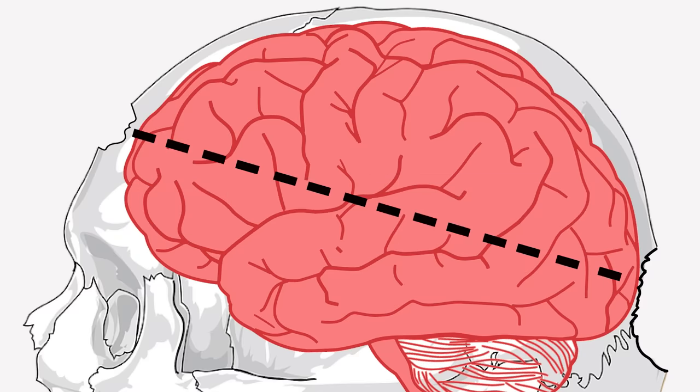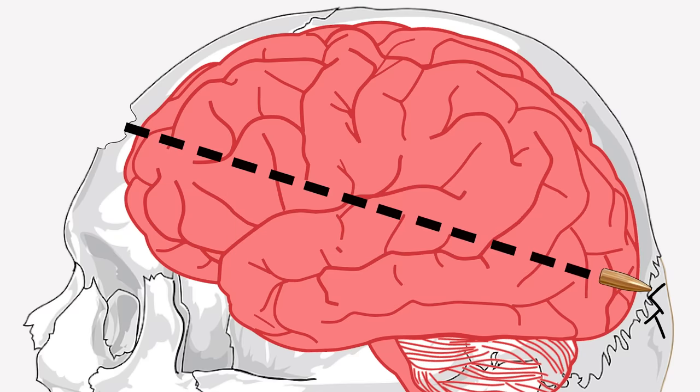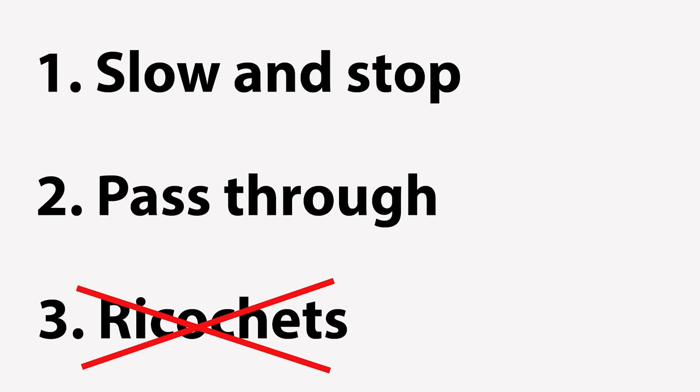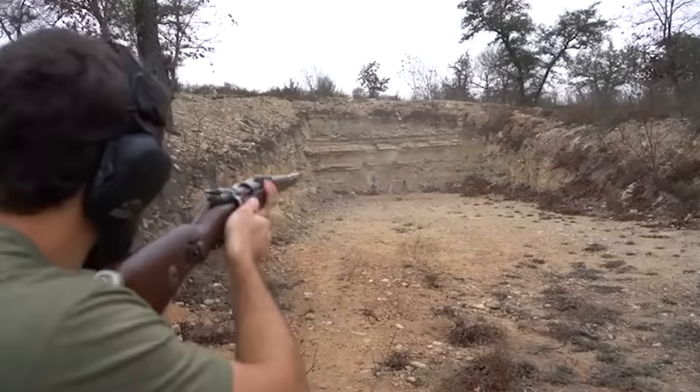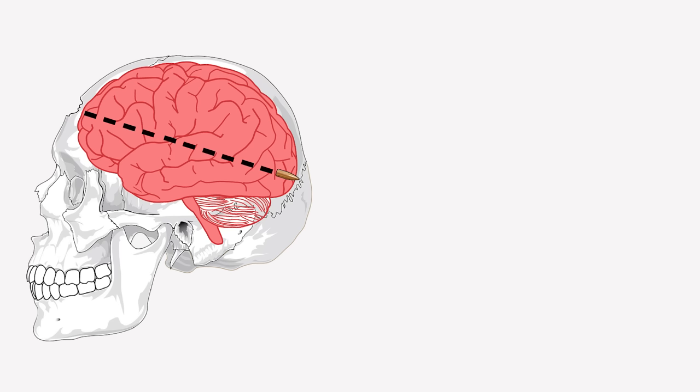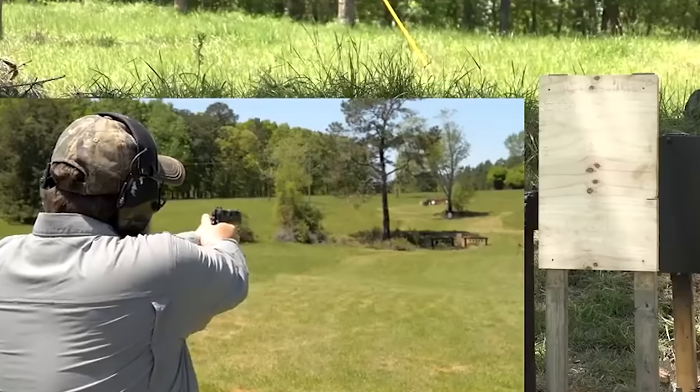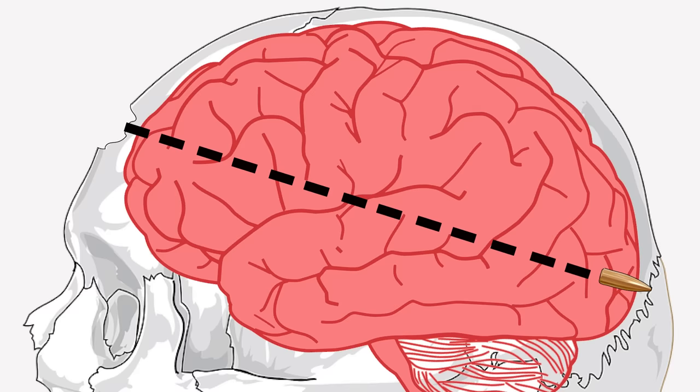Two, it passes cleanly through, or three, it ricochets inside the head. Of the three, the least common is the third, accounting for about 20% of all bullet paths. If the round was fired from a high-powered rifle, it will most likely pass through. If it's fired from a pistol, it will likely stop in the brain or ricochet.